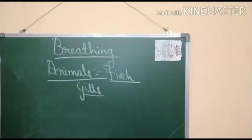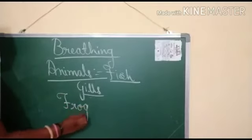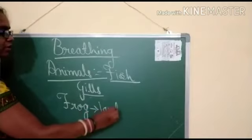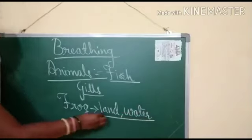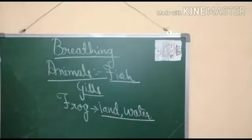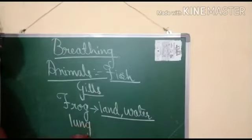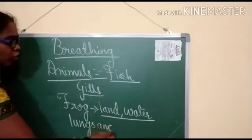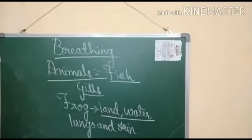Now we will see the second example — an animal which lives on land as well as in water, for example, frog. Frog is an animal which lives on land as well as in water. That is why the breathing organs in frog are skin and lungs. Frog breathes through lungs as well as skin.